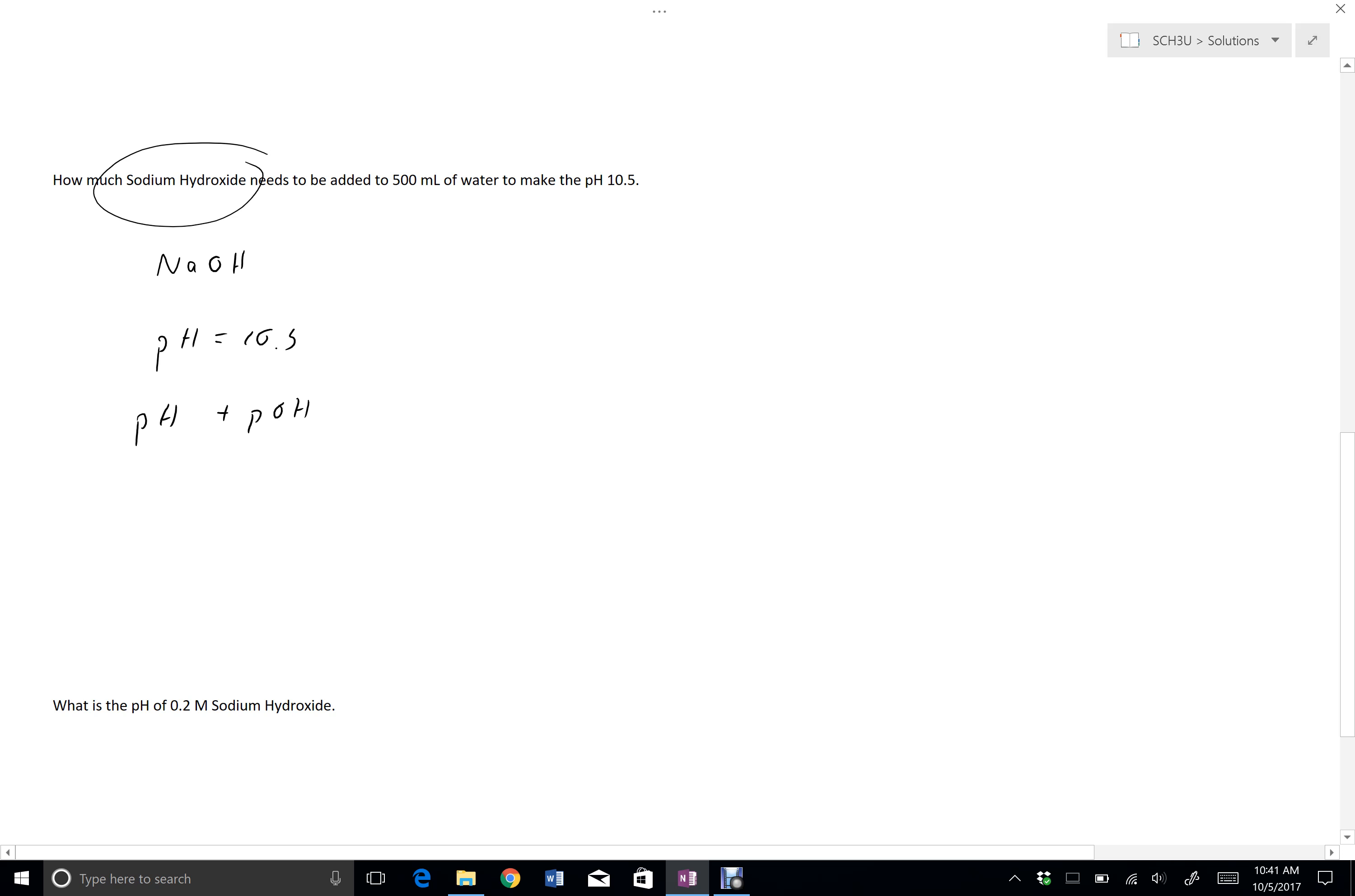So if my pH is 10.5 and my pH plus pOH has to be 14, then 10.5 plus pOH is 14, and so pOH is 3.5.